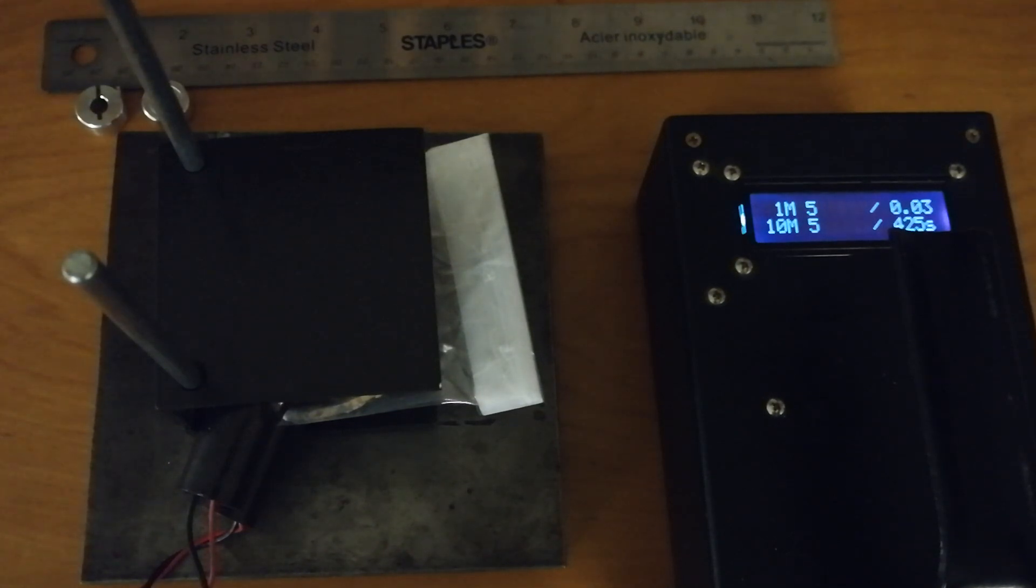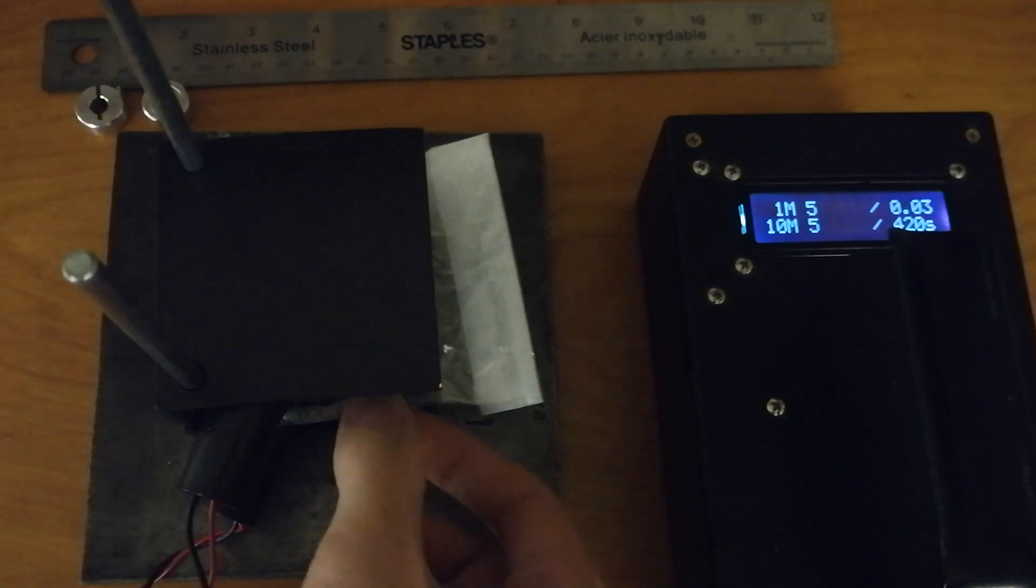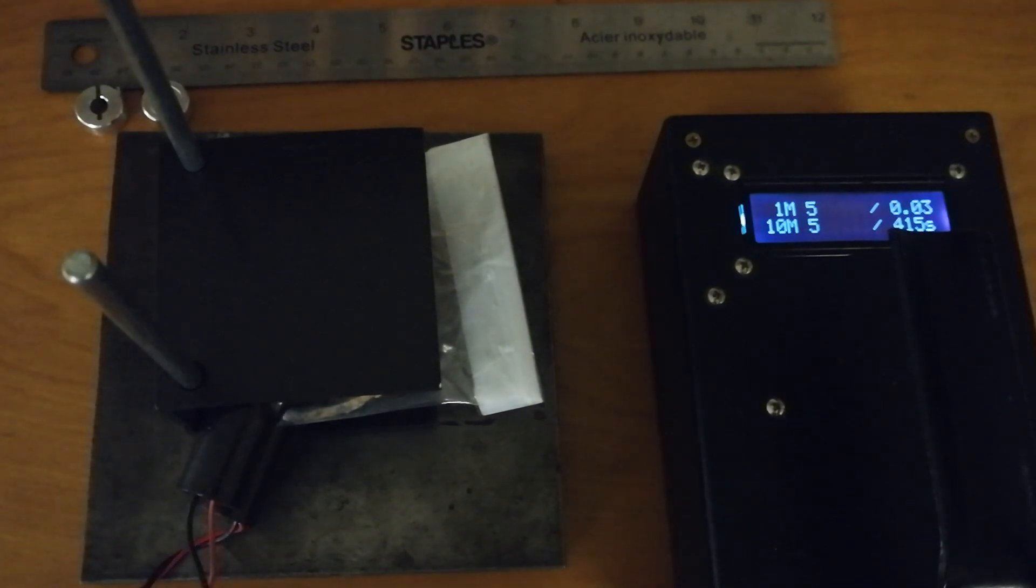So as you can see in this setup, there's a lot more sensitivity to the muons. And so since there's this lead disk in between them, regular terrestrial radiation is very unlikely to penetrate both tubes.